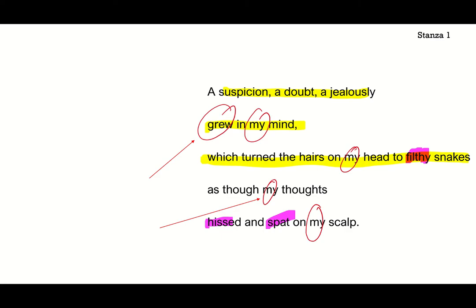So let's get started with the analysis. Stanza one: 'A suspicion, a doubt, a jealousy grew in my mind, which turned the hairs on my head to filthy snakes as though my thoughts hissed and spat on my scalp.' In the yellow, we've got this allusion — a reference to the original myth. Duffy has chosen to open the poem with a direct reference to the myth with snakes as hair, so it's really obvious who the text is about.